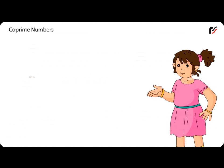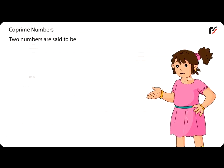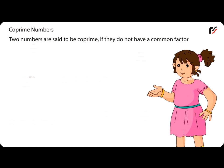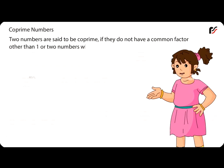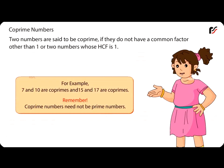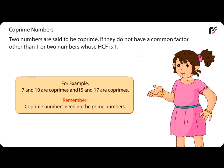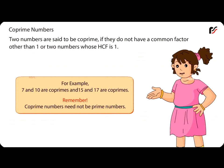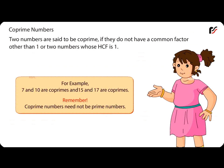Coprime Numbers: Two numbers are said to be coprime if they do not have a common factor other than 1, or two numbers whose HCF is 1. For example, 7 and 10 are coprimes, and 15 and 17 are coprimes. Remember, coprime numbers need not be prime numbers.